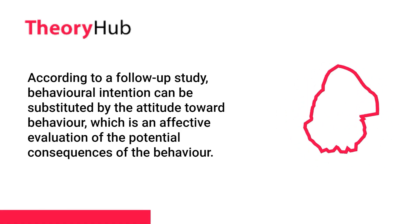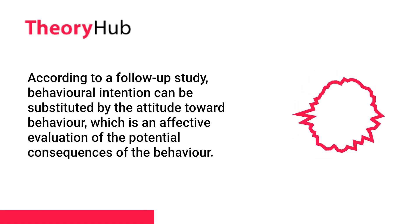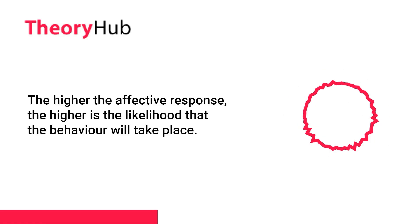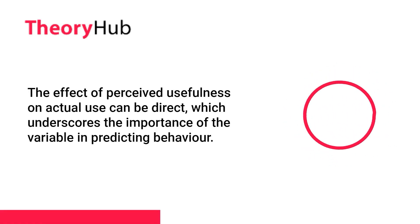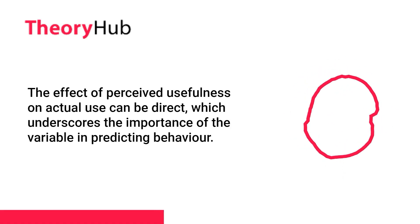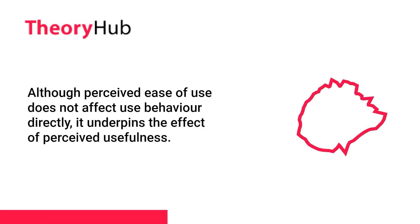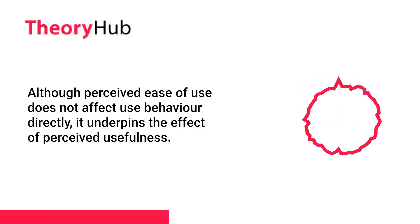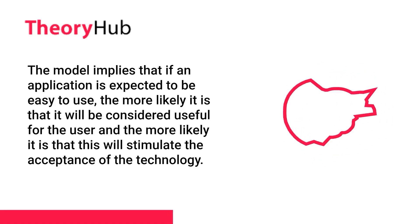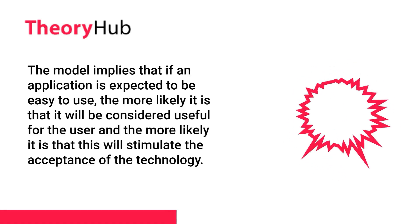According to a follow-up study, behavioral intention can be substituted by the attitude toward behavior, which is an affective evaluation of the potential consequences of the behavior. The higher the affective response, the higher is the likelihood that the behavior will take place. The effect of perceived usefulness on actual use can be direct, which underscores the importance of the variable in predicting behavior. Although perceived ease of use does not affect use behavior directly, it underpins the effect of perceived usefulness. If an application is expected to be easy to use, the more likely it is to be considered useful, and the more likely it is to stimulate the acceptance of the technology.